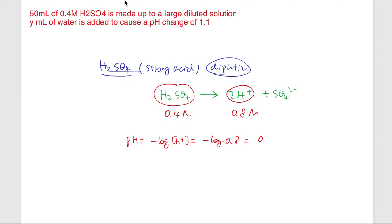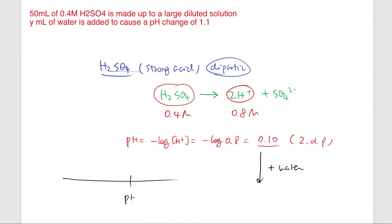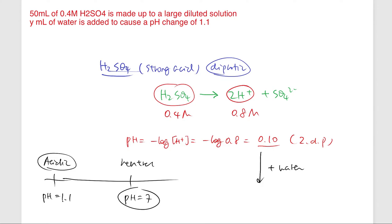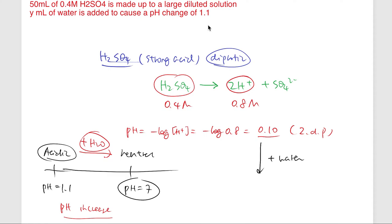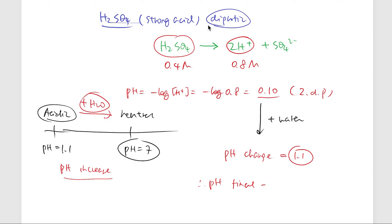They told us this also causes a pH change of 1.1 when we add water. For an acidic solution, pH 7 is neutral and our initial pH of 0.1 is acidic. When you add water to an acidic solution, the pH increases. So the pH change is positive: the final pH equals 0.1 + 1.1 = 1.2.